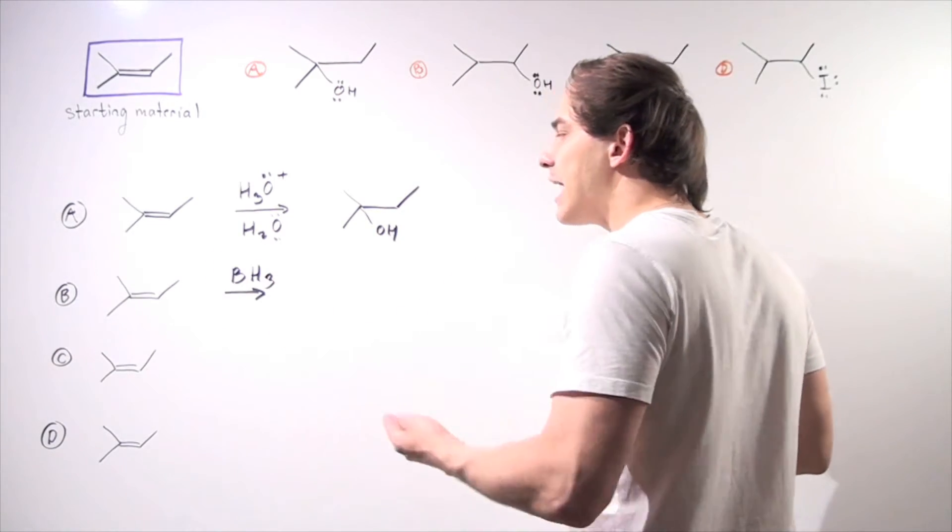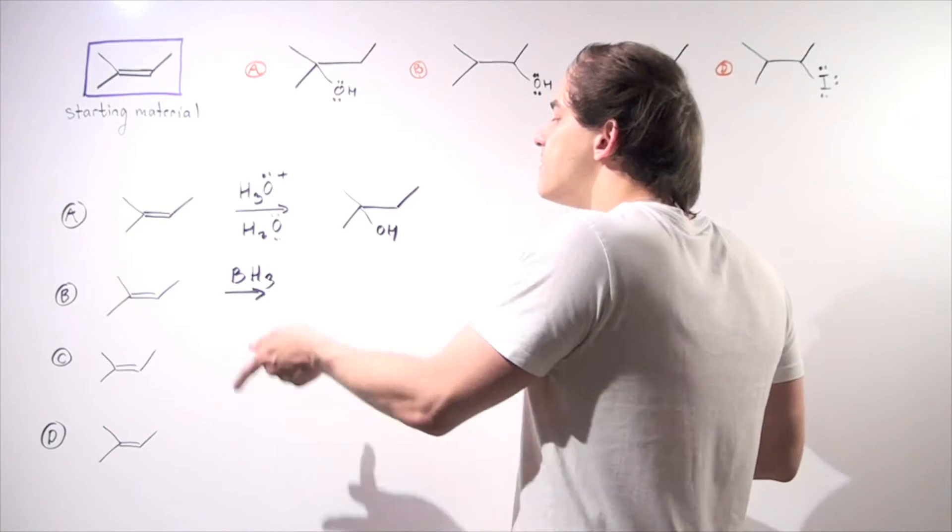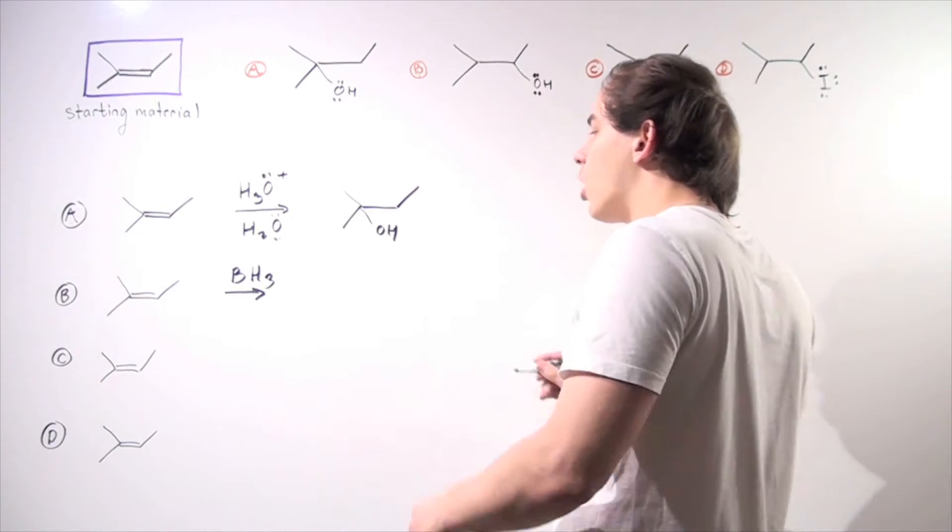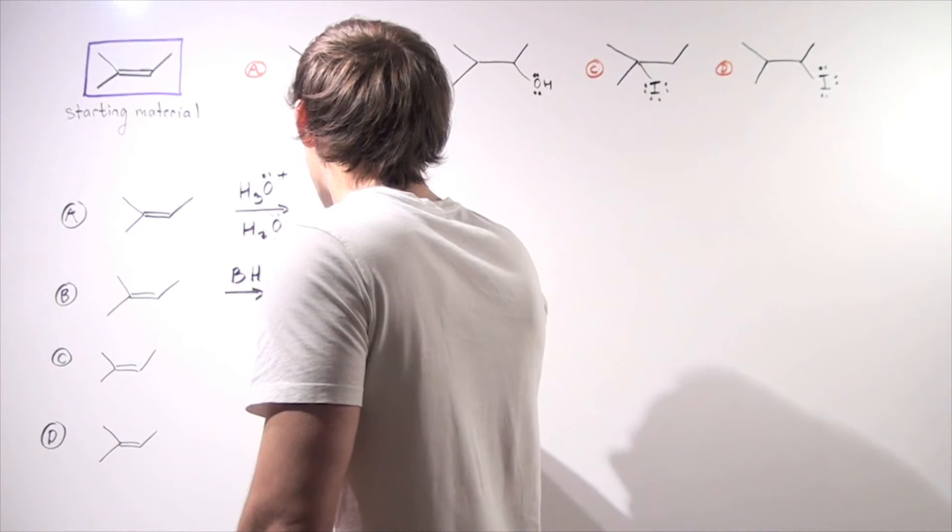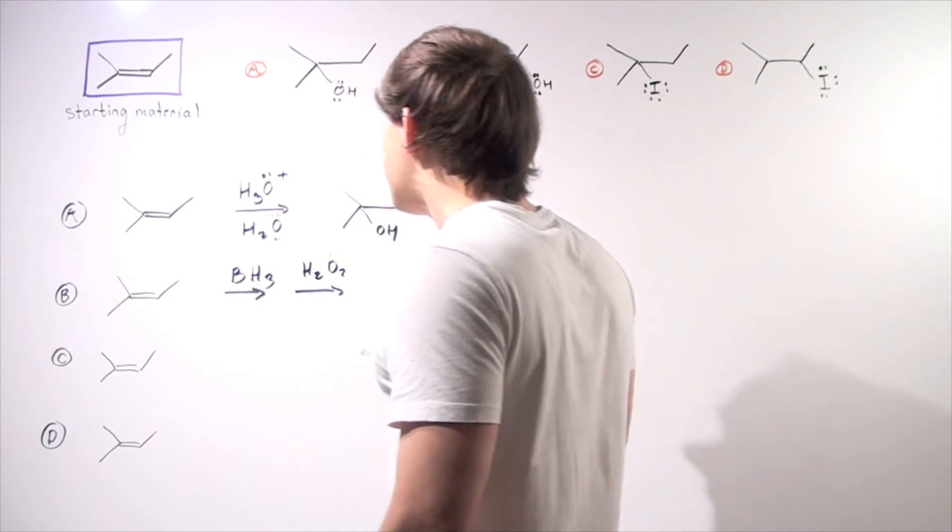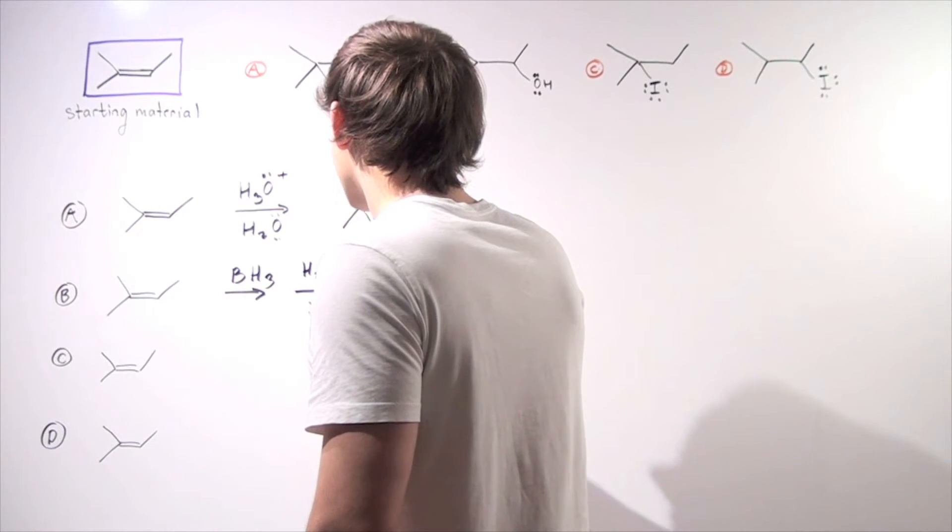What the BH3 allows us to do is to produce the BR3. And then after we produce the BR3, we simply mix in hydrogen peroxide and we mix in our OH molecule, our hydroxide base.